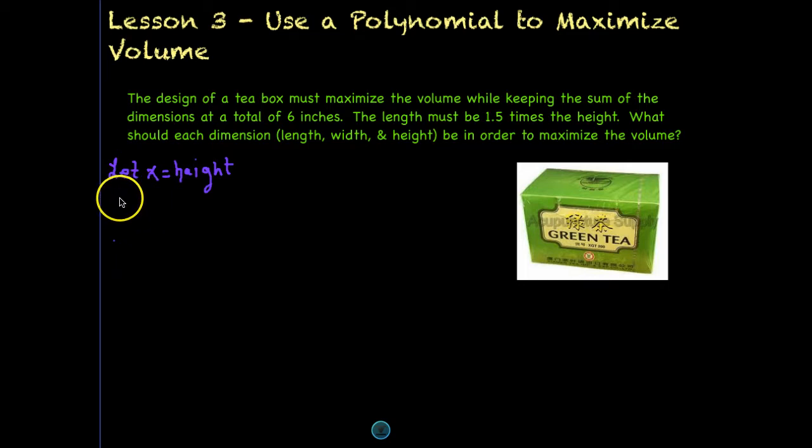So let's identify length. So our length must be one and a half times the height. Well x is height, so we need to multiply that by 1.5 to get the length. The length is one and a half times the height, and the height we said was x.